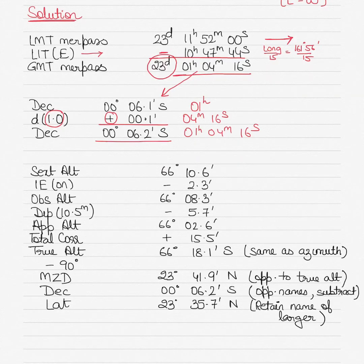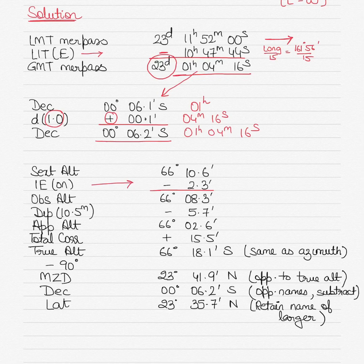We now start reducing the sextant altitude to get the true altitude. Sextant altitude is 66 degrees 10.6 minutes, as given in the question. You apply the index error of minus 2.3 — on the arc is always subtracted, off the arc is always added. So you subtract it and get an observed altitude of 66 degrees 8.3 minutes. To that you apply the height of eye, or dip correction. Height of eye is 10.5 meters.